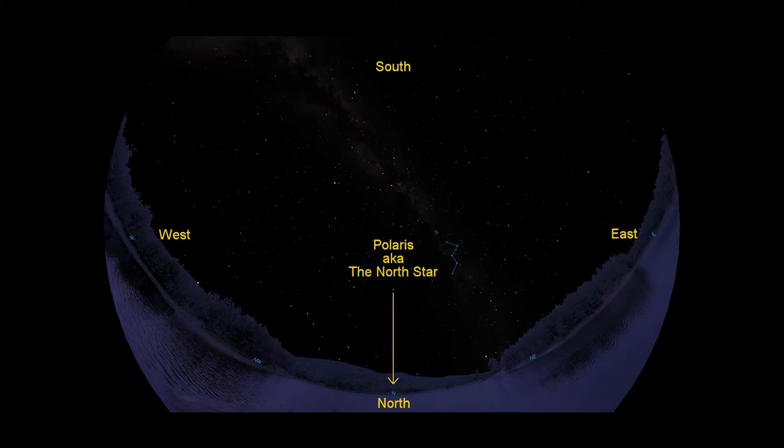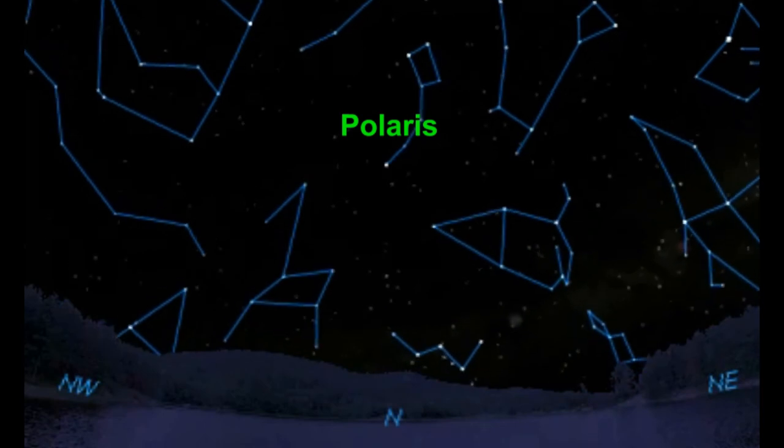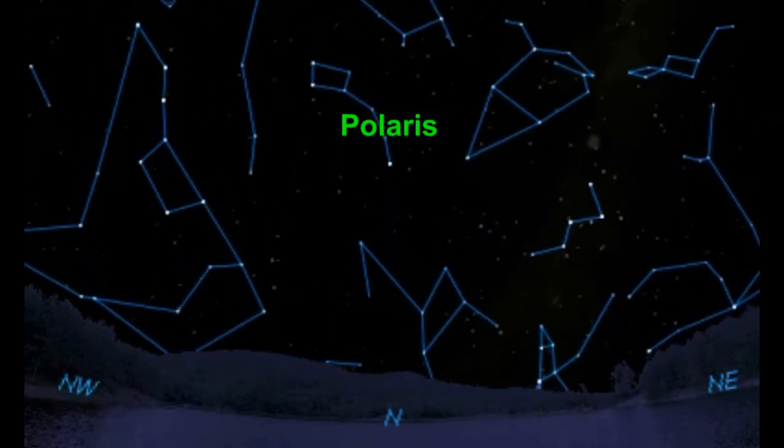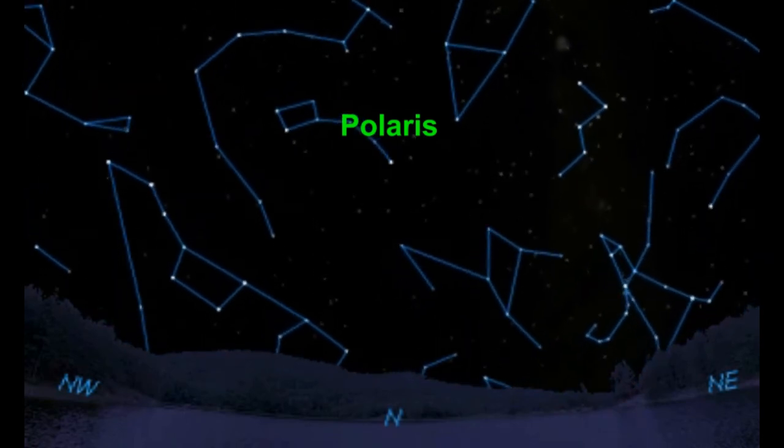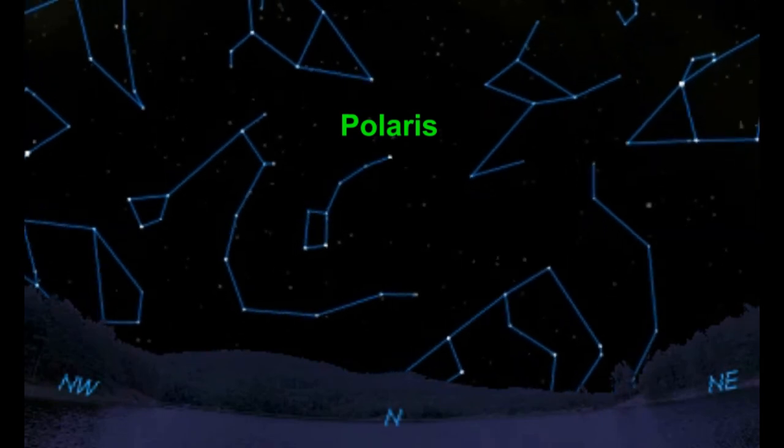All the other stars wheel around this pivot point anti-clockwise, making them appear to rise in the east and set in the west. This is, of course, an illusion caused by the Earth's spin, which gives the appearance that the stars are moving, when in fact, it is the Earth that's moving.